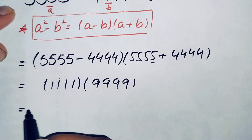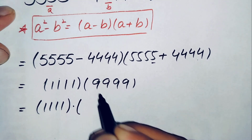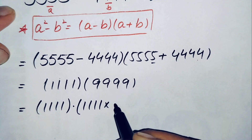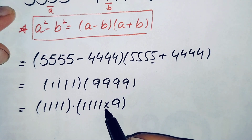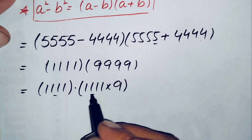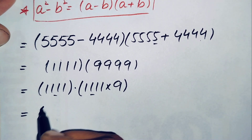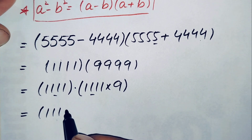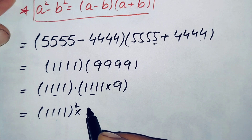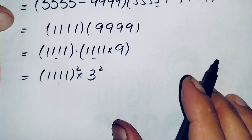Next, we rewrite 9,999 as 1,111 times 9. So we now have 1,111 times 1,111 times 9, which we can write in square form as 1,111 squared times 9. We also write 9 as 3 squared, so we have 1,111 squared times 3 squared.